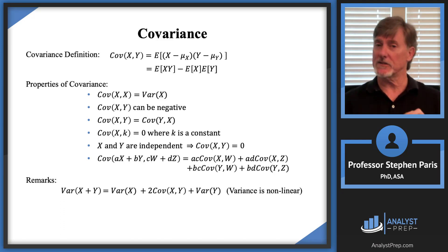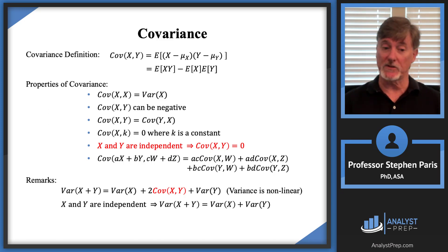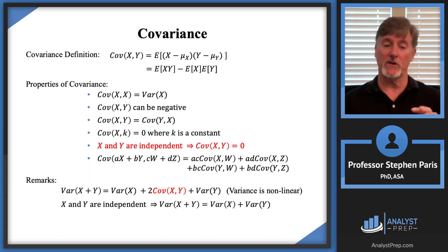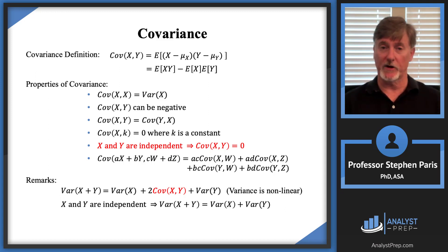What if cap X and cap Y were independent random variables? In that case, the covariance of cap X with cap Y would be zero, so the variance of cap X plus cap Y would be the sum of the variances. When you have independent random variables, Var(X + Y) = Var(X) + Var(Y). You have to be careful to make sure the random variables are independent before using that expression.